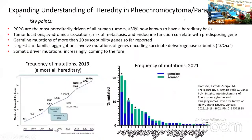Our understanding of the heredity of pheochromocytomas and paragangliomas has also continued to expand. Key points to remember are that these tumors are the most hereditarily driven of all human tumors, and at least 30% are now known to have a hereditary basis. Tumor locations, syndromic associations, risk of metastasis, and endocrine function all correlate with the predisposing gene. Germline mutations of more than 20 susceptibility genes have so far been reported, and the largest number of familial aggregations involve mutations of genes encoding subunits of succinate dehydrogenase, often collectively referred to as SDHX genes and SDHX mutations.